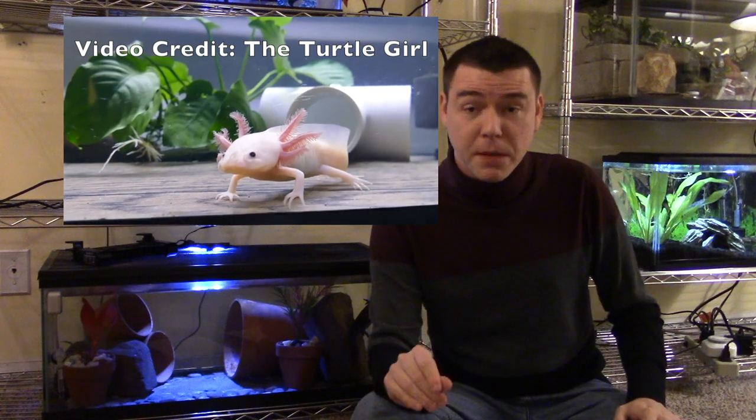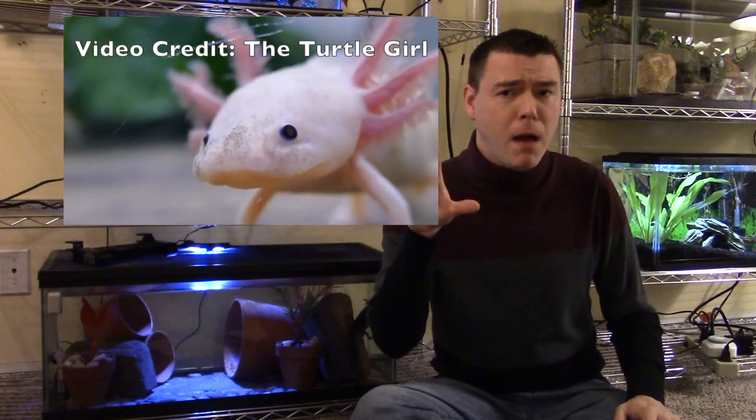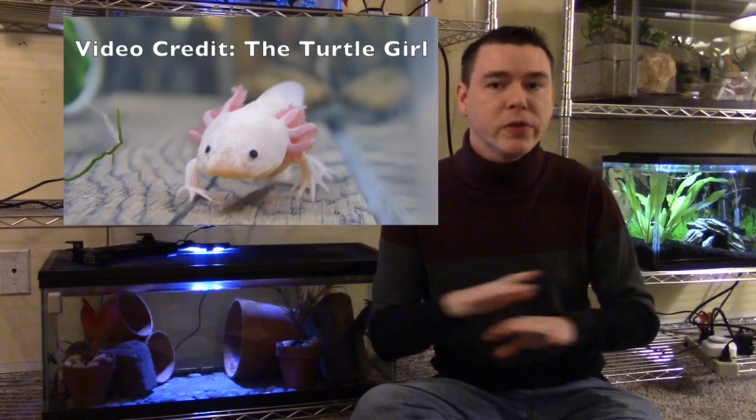Also, if you just have a flat surface of tile or slate not combined with any sand or anything, it's really easy to clean just like a bare bottom tank. But unlike a bare bottom tank, it provides a better grip for your axolotl. It's not a smooth glass surface and it's not going to stress your axolotl out like a bare bottom tank could. And the biggest pro to using tile or slate is that it can't be ingested by your axolotl.